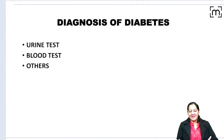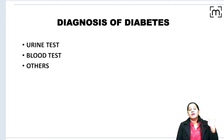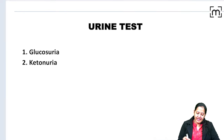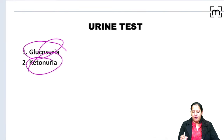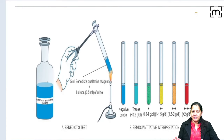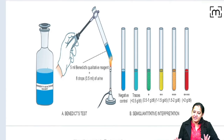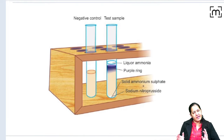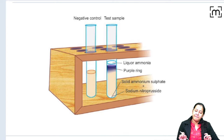To diagnose diabetes, there are three approaches: urine tests, blood tests, and others. In urine testing, the Benedict test is used to detect glucose, and the Rothera test is used to detect ketones.